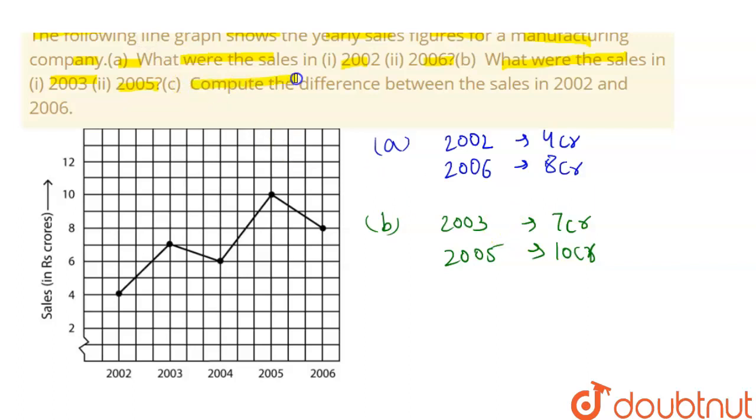The last part is: compute the difference between the sales in 2002 and 2006. C part is sales in 2002 minus sales in 2006. So in 2002 the sales were 4 crores and in 2006 was 8 crores, so the difference is 4 crores.